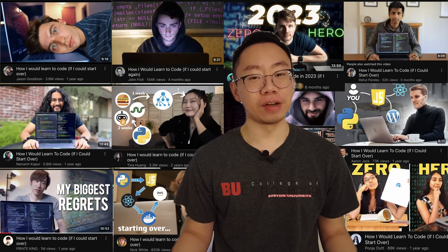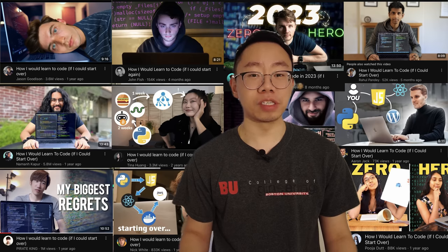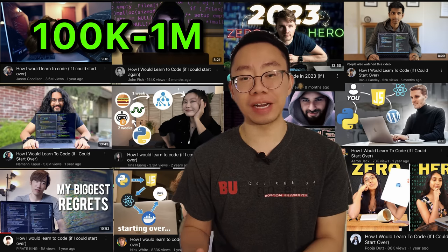YouTube is flooded with videos titled How I Would Code If I Could Start Over, and most of them have between 100,000 and 1 million views thanks to YouTube's algorithm. It seems to be a bandwagon that every software engineer YouTuber has jumped on.